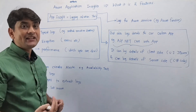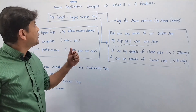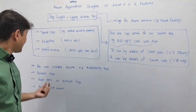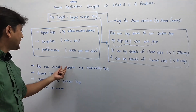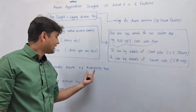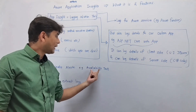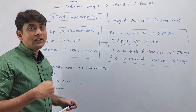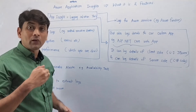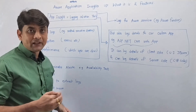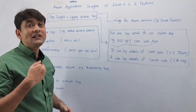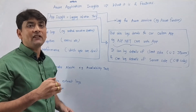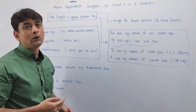Additionally, we can create alerts using Application Insights. For example, we can create an alert for an availability test, meaning the alert will run periodically as per the configured time and check whether our system is up and running. If our system is down, it can send email notifications.